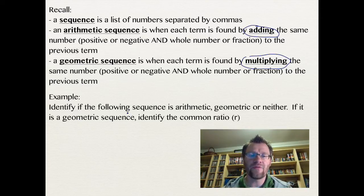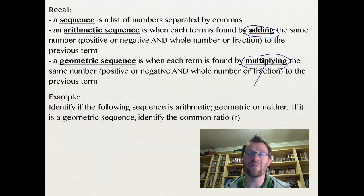So in this example, identify if the following sequence is arithmetic, geometric, or neither. If it's a geometric sequence, we're going to identify what we call the common ratio. And that common ratio is the number that we are multiplying by each term.